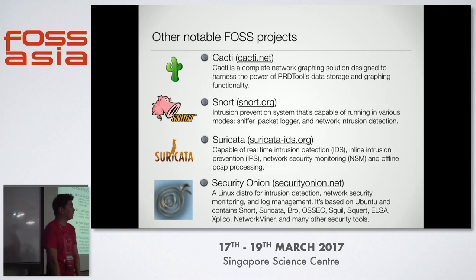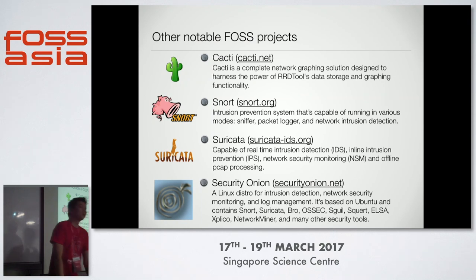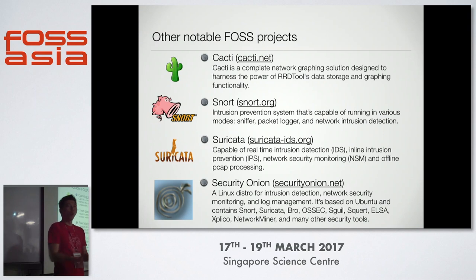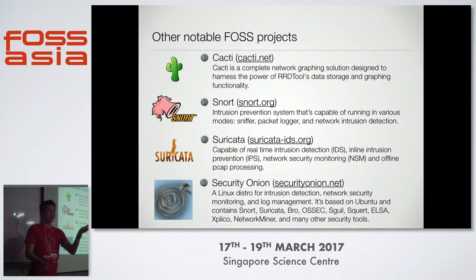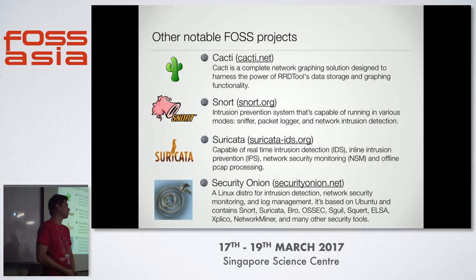Finally, there's Security Onion. It's a Linux distro — specifically an Ubuntu distro — that packages all these network monitoring solutions together. If you're in security and you know about Kali for penetration testing, Security Onion is the network monitoring equivalent of Kali. Go and download it if you're interested.